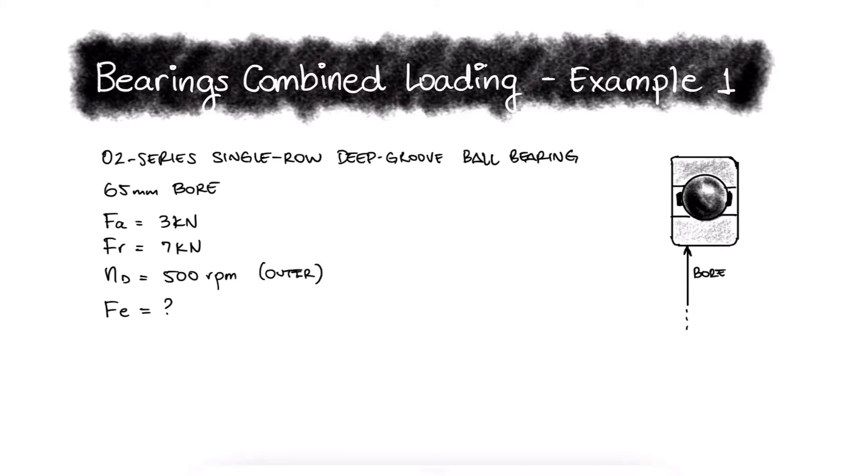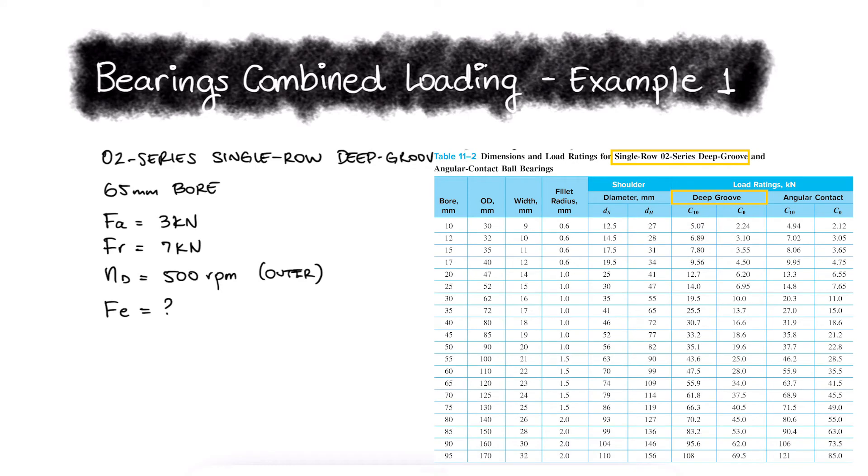This is the first example for the bearings combined loading main video, link below. For this type of ball bearing and a 65mm bore, we have a basic static load rating C0 of 34kN.